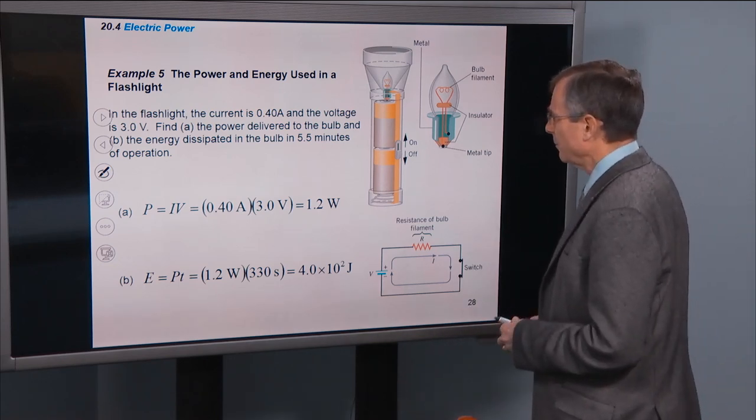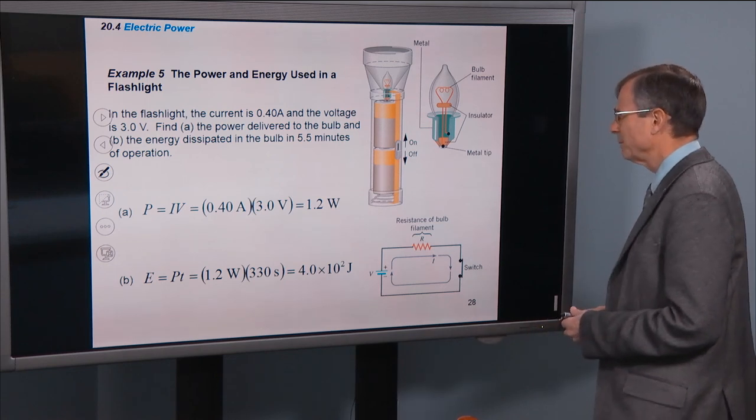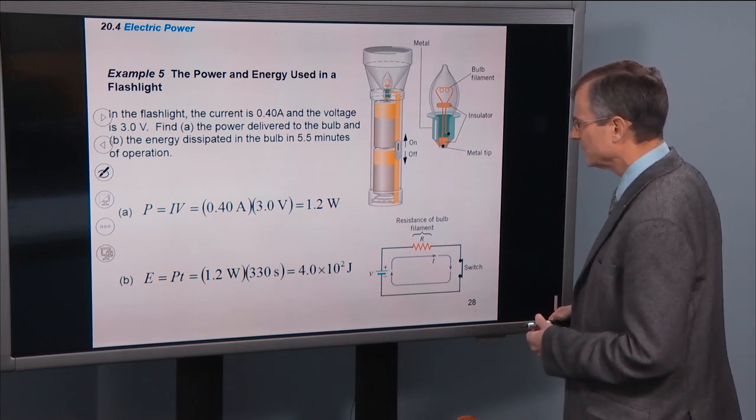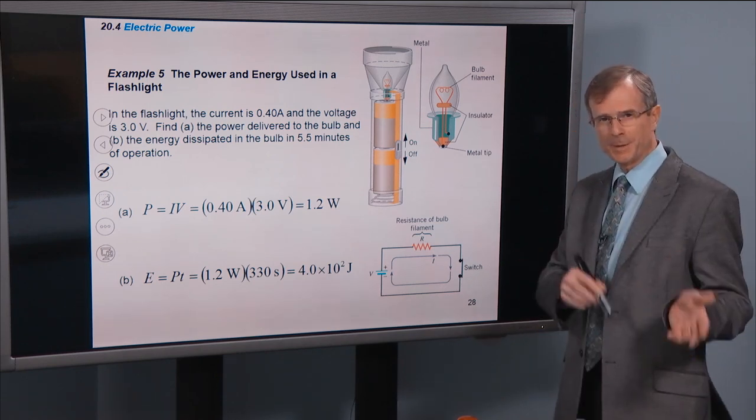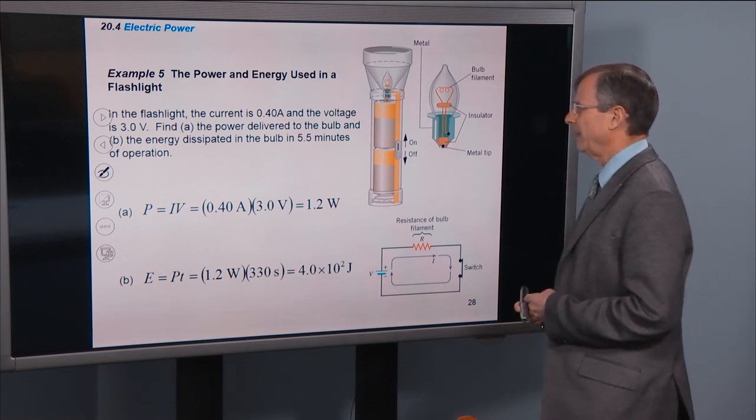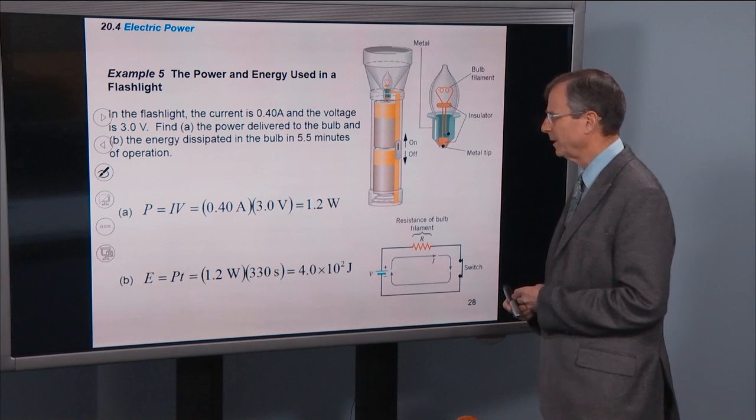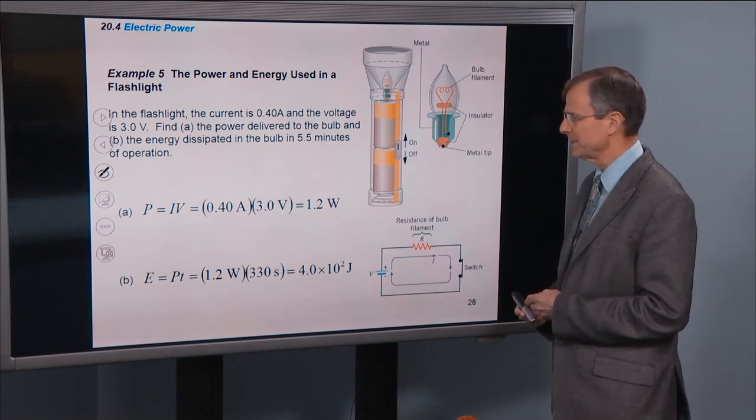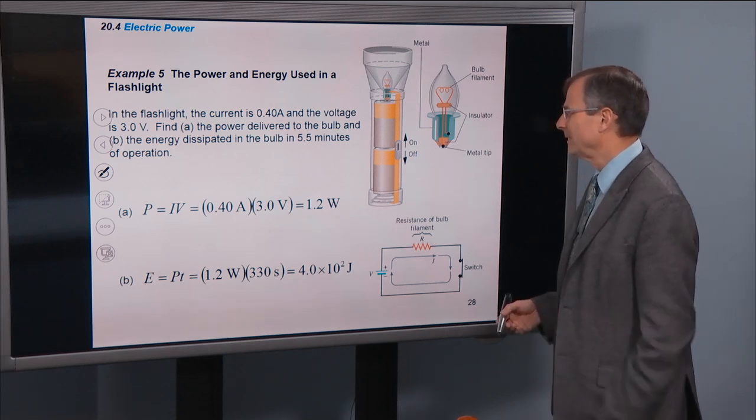Another example, in the flashlight the current is 0.4 amps, the voltage is 3 volts. As we talked about before, find the power delivered to the bulb and the energy dissipated in the bulb in 5.5 minutes. This is a fun problem.